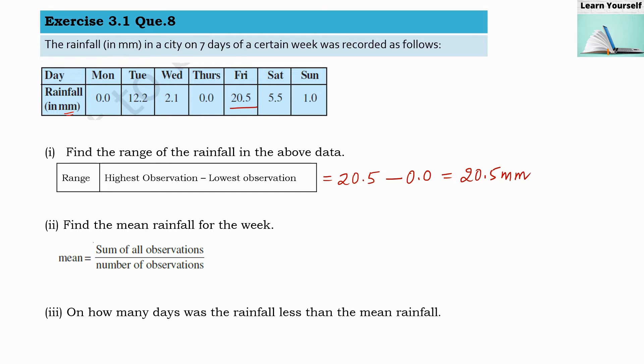Second question is find the mean rainfall for the week. Now this is a formula for the mean: sum of all the observations divided by number of observations. We are going to write all the observations here.